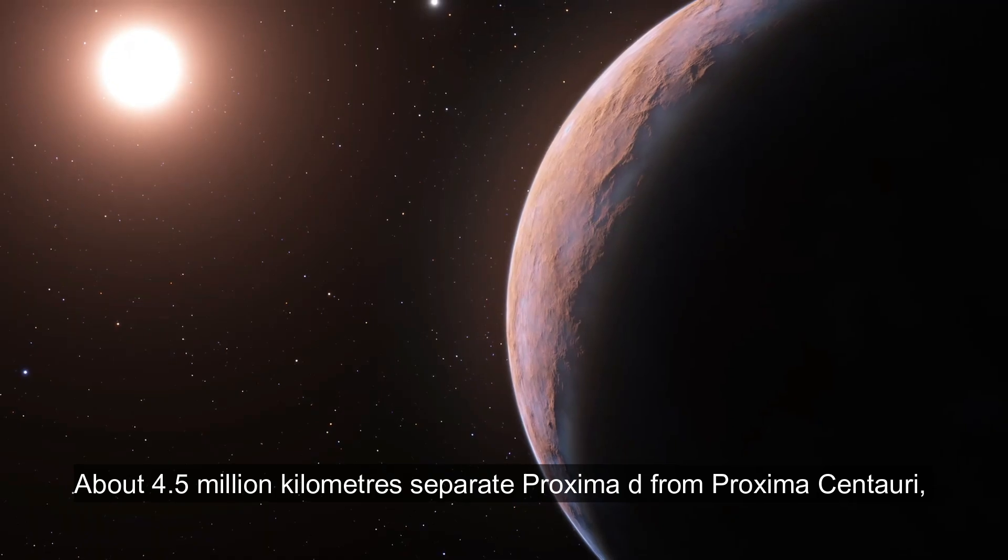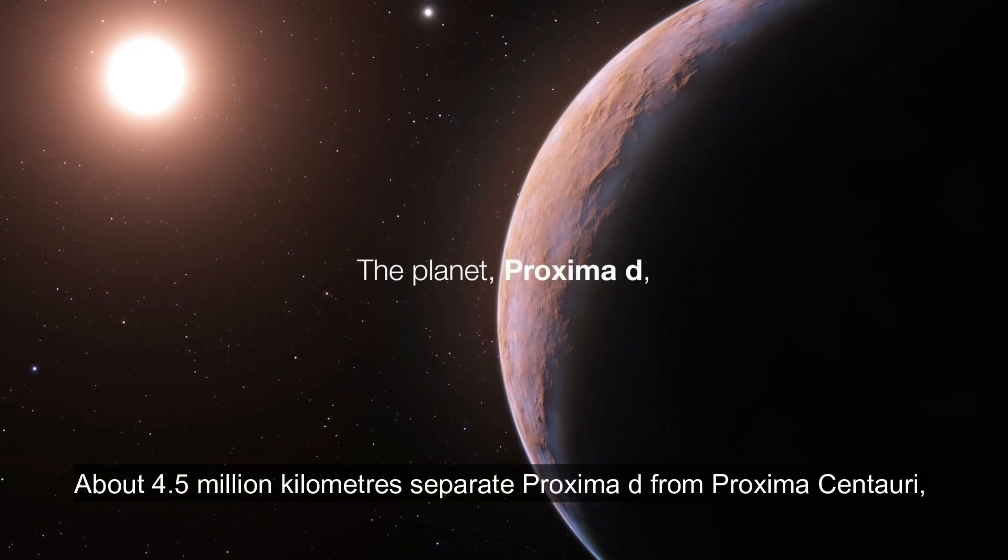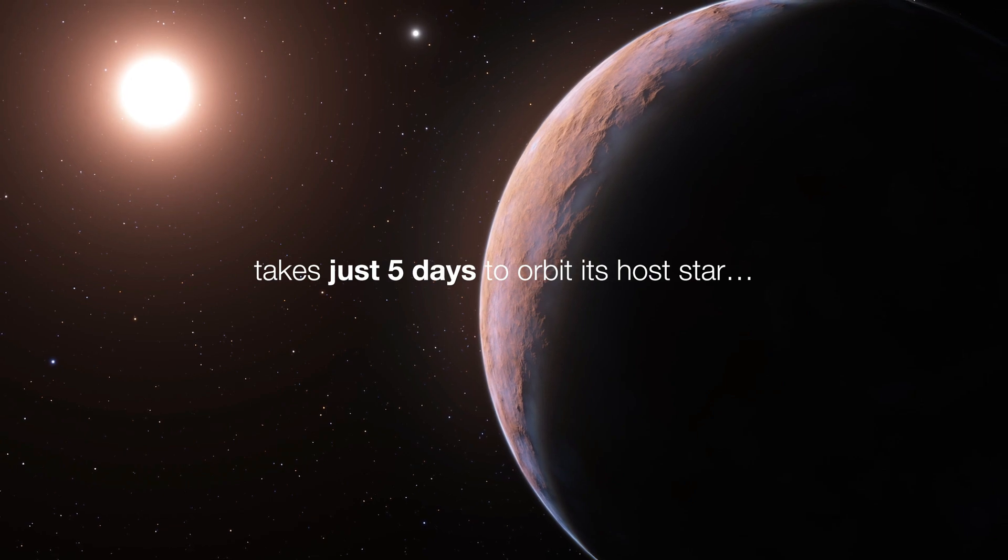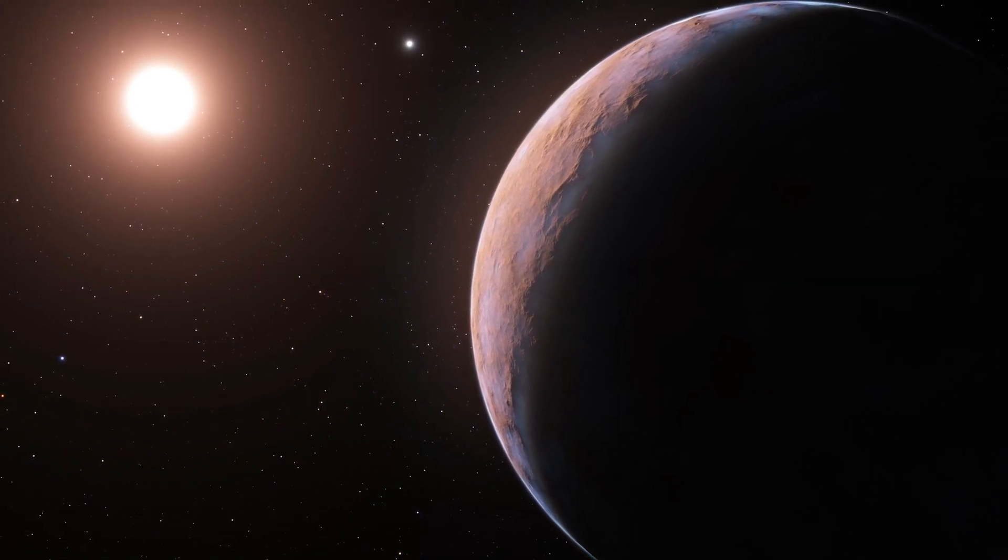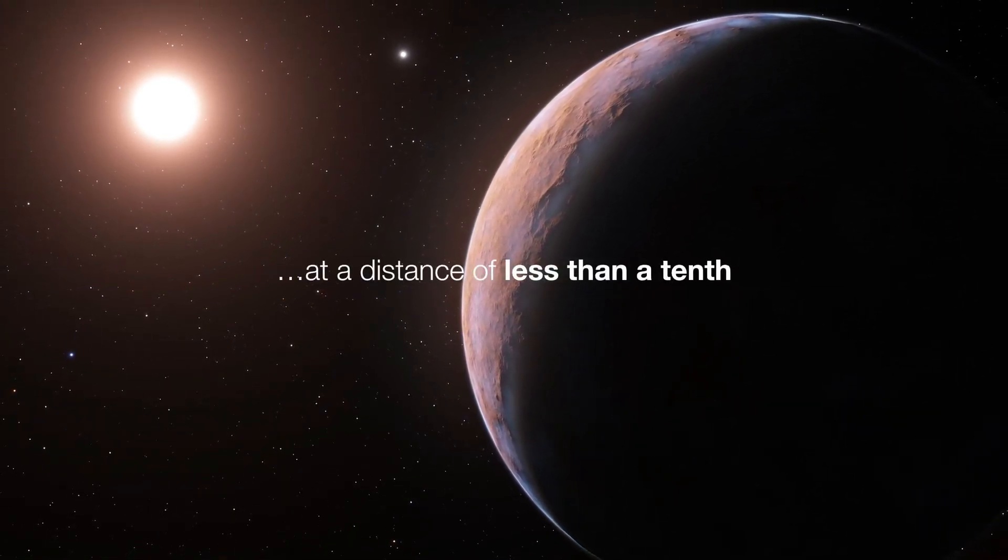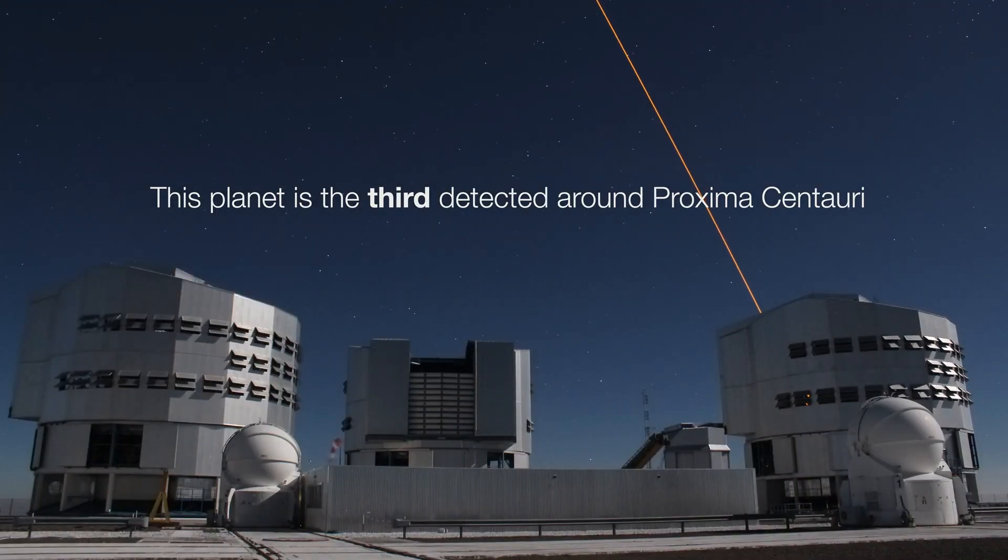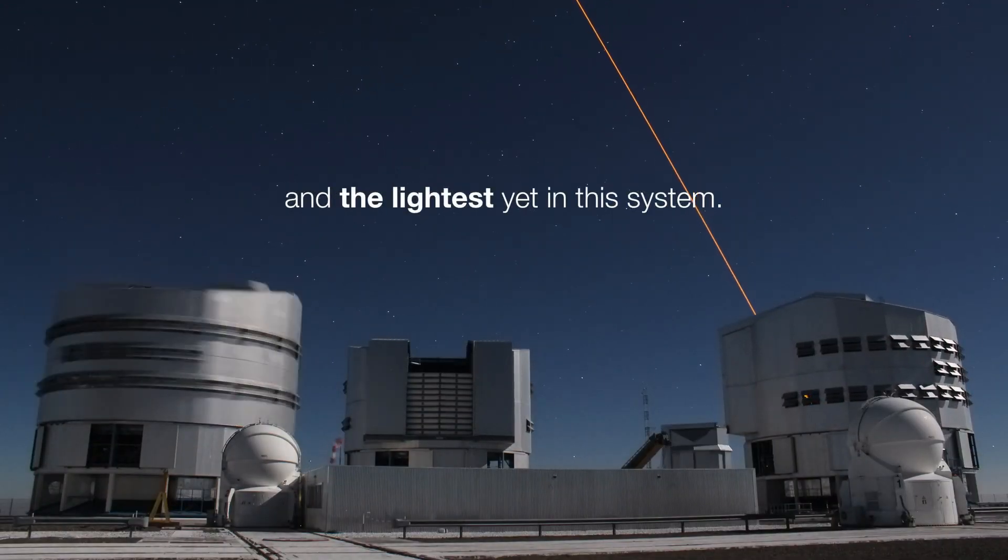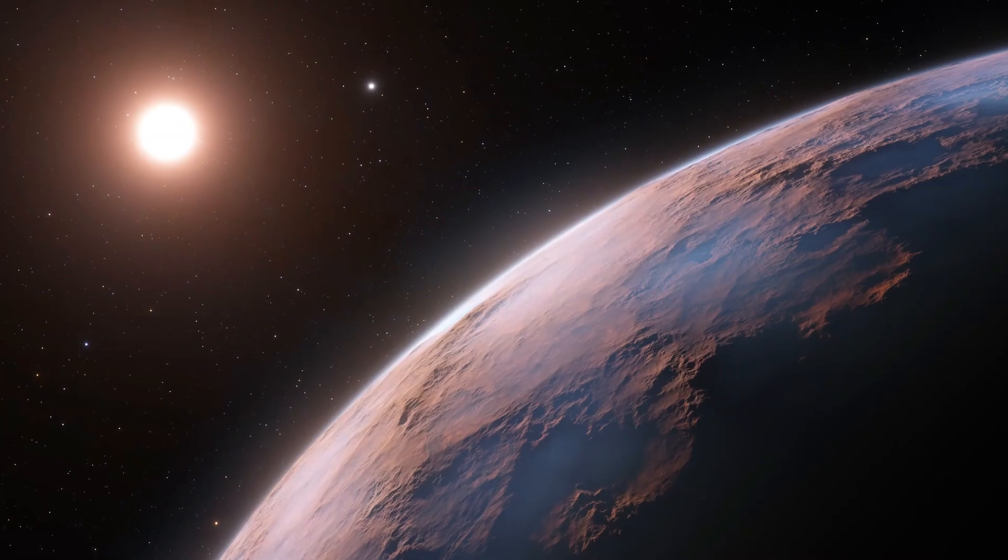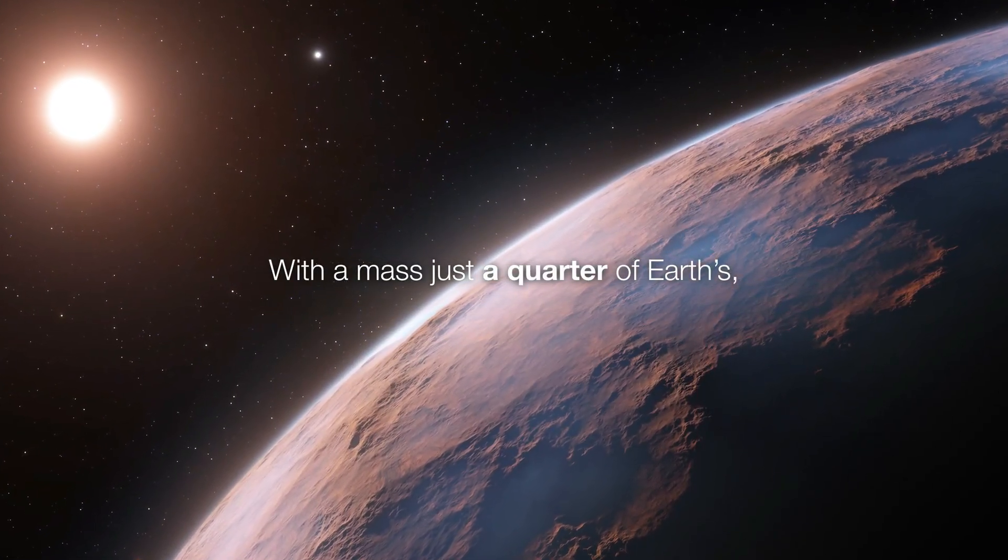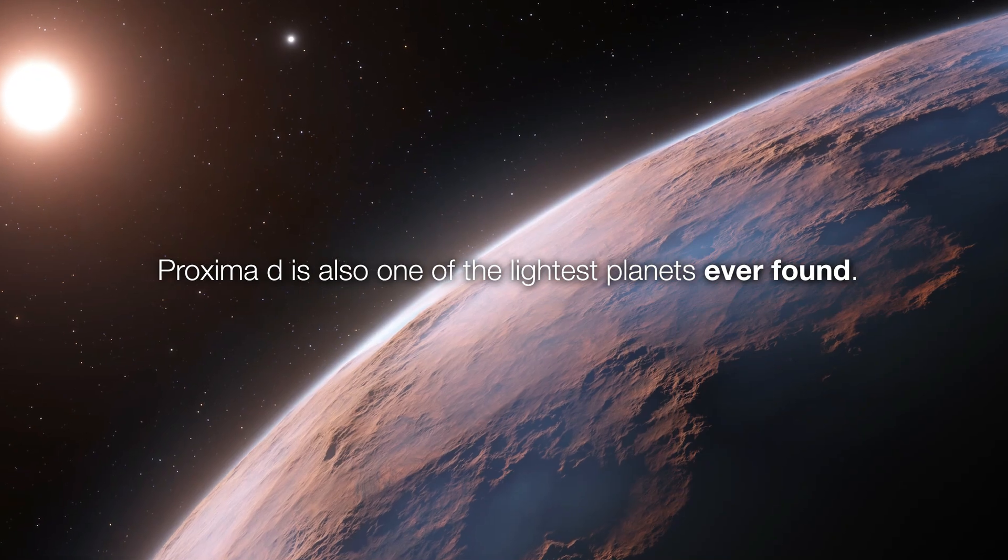About 4.5 million kilometers separate Proxima D from Proxima Centauri, a small rocky planet, sub-Earth, with a mass of roughly 0.29 times that of Earth, and an orbital period of roughly 5.15 Earth days. This planet is one of the smallest ever found in other star systems, and its peculiarities include being too close to the star, which makes it too hot for liquid water or life as we know it.